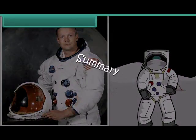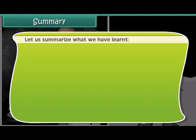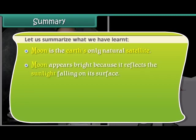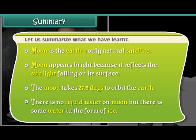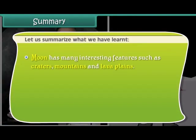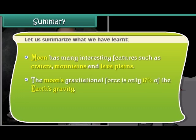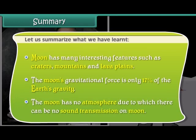Summary. Let us summarize what we have learned. Moon is the earth's only natural satellite. Moon appears bright because it reflects the sunlight falling on its surface. The moon takes 27.3 days to orbit the earth. There is no liquid water on moon but there is some water in the form of ice. Moon has many interesting features such as craters, mountains and lava plains. The moon's gravitational force is only 17 percent of the earth's gravity. The moon has no atmosphere due to which there can be no sound transmission on moon.